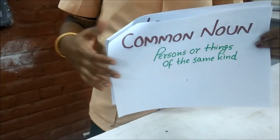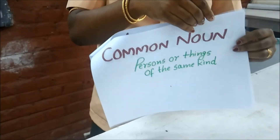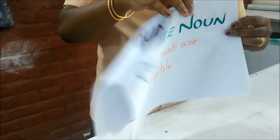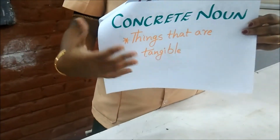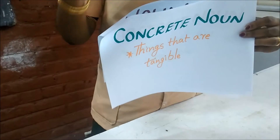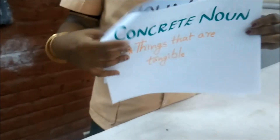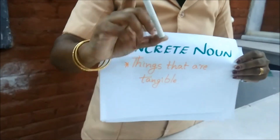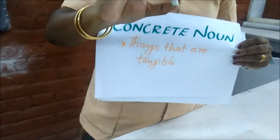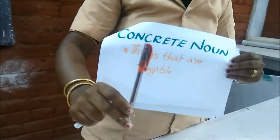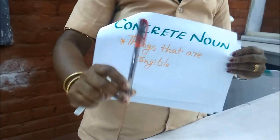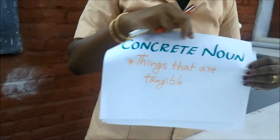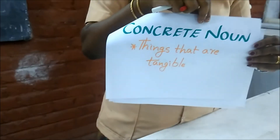The next category of noun is the concrete noun. Concrete nouns are nouns that are tangible — they can be touched and they can be seen. For example, this is a chalk; we can touch a chalk, it is a physical thing. This is a pen; you can touch it, it is a tangible, physical thing. These categories of nouns are known as concrete nouns.